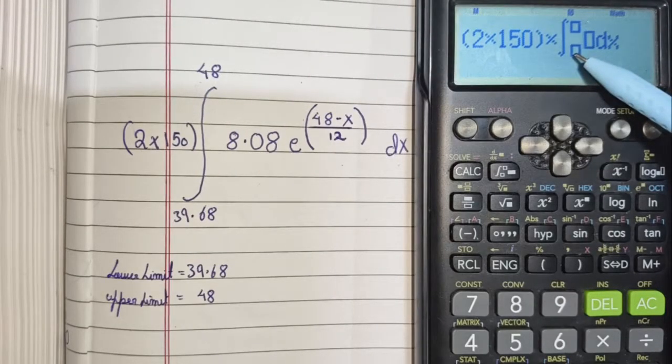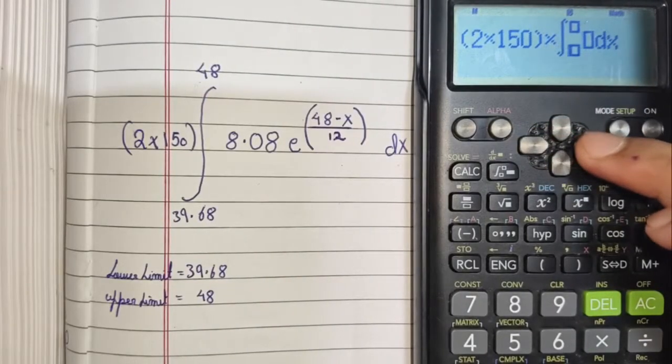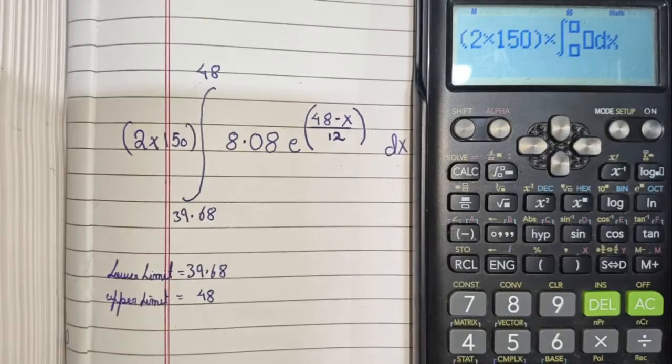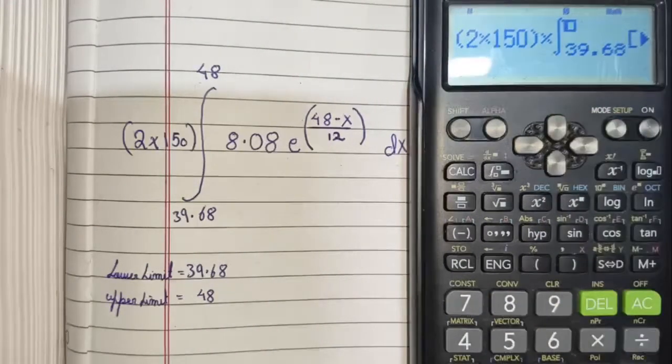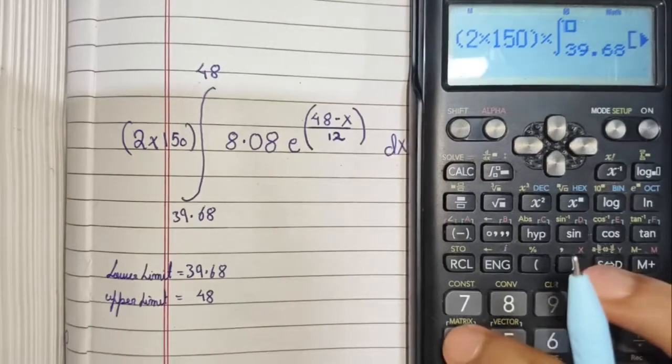Here, you have to feed the lower limit. Here, you have to feed the upper limit. Let's feed the lower limit first. With the arrow keys, you can navigate around. So, lower limit is 39.68. Let's go to the upper limit. The upper limit is 48.